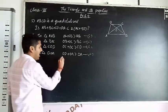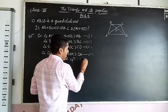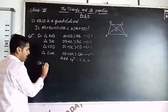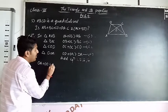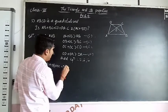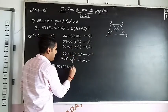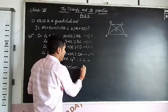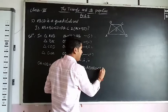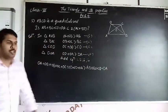So add equation one, two, three, and four. So add it. OA + OB, next OB + OC, plus OC + OD, plus OD + OA is greater than AB + BC + CD + DA.